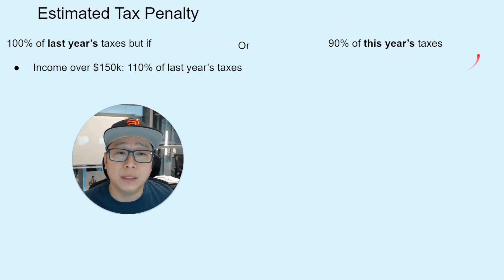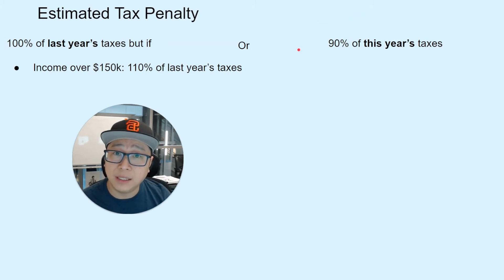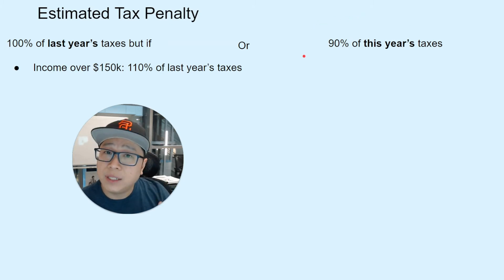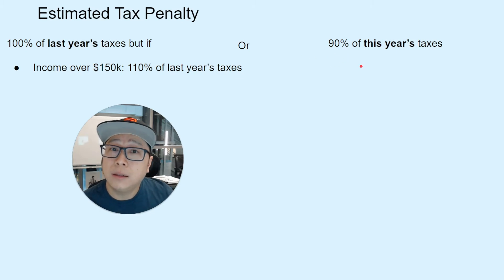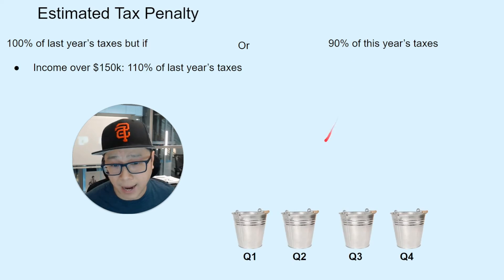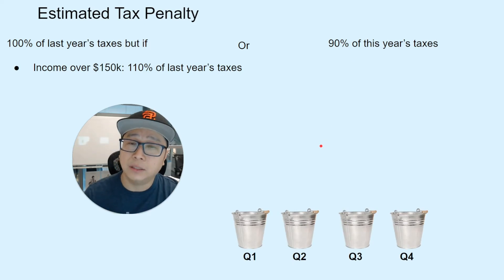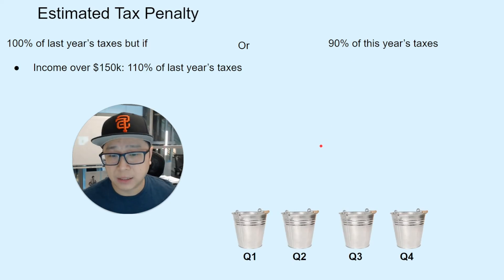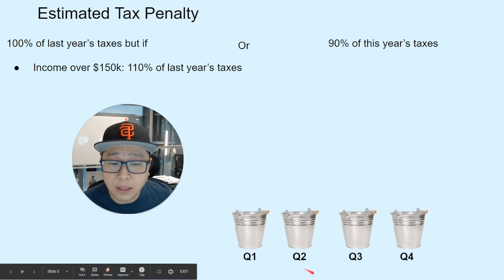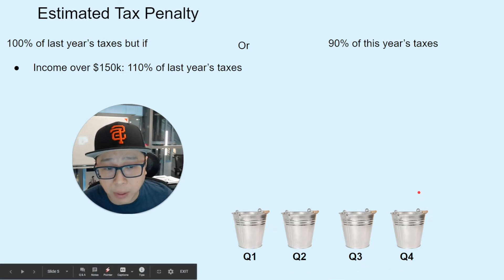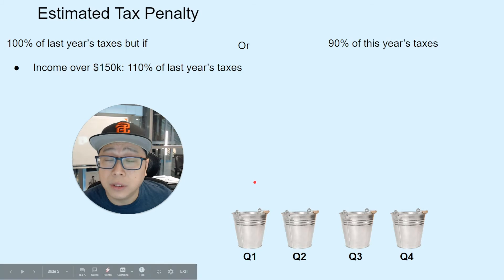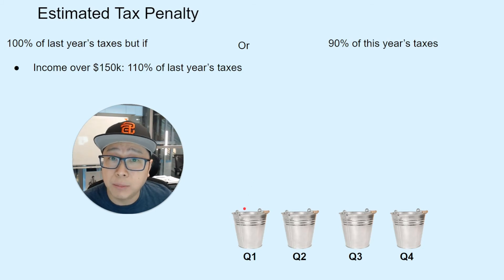We'll start with this year. What you could do is calculate your taxes for this year and pay 90% of it on a quarterly basis. Think of it as working with buckets — bucket one is Q1, Q2, Q3, Q4. Each bucket the IRS expects you to put money into as a tax payment to avoid a penalty.